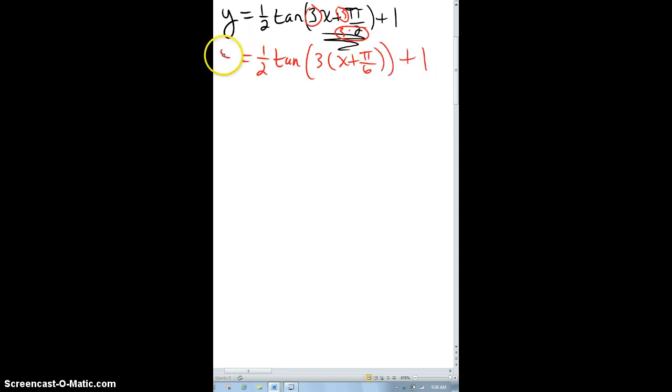Again, if that bothers you, to get the phase shift, you can always set bx, what was it, plus pi over 2, the original, equal to 0. That's pi by 3rd. So there's my phase shift there. So my phase shift is a negative pi over 6.